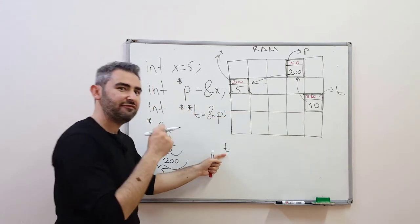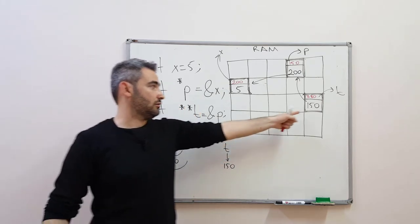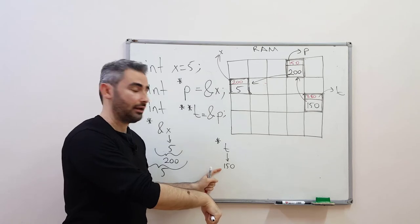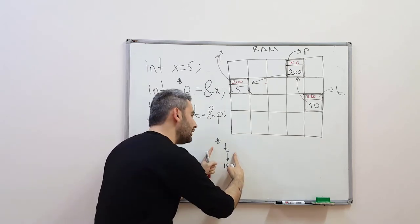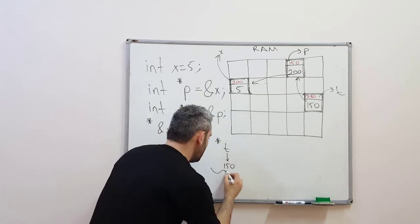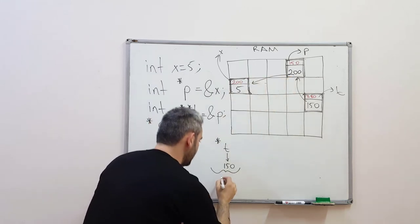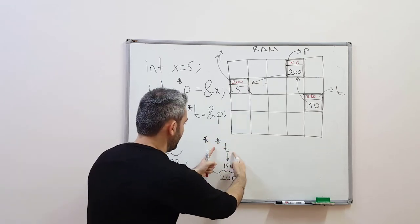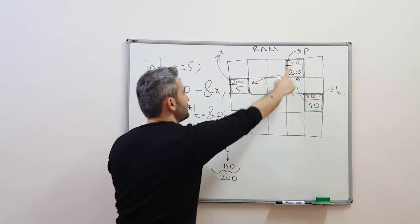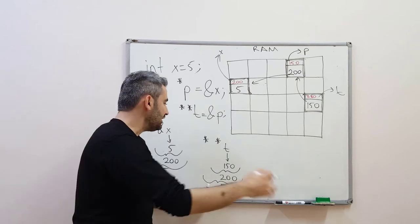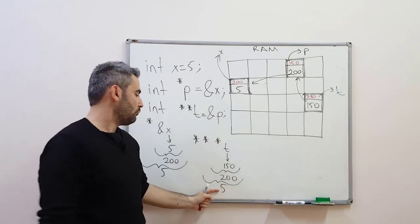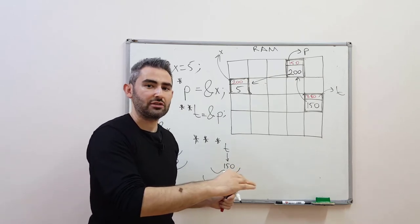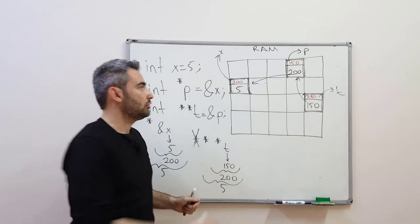If I want to print t, it will give me 150 — the content of t, which is an address. So I can dereference that: I can go to that address and look what's inside. This is 150 — resolve 150. Who is in 150? It's 200. And 200 is also an address, so I can resolve that too. Resolve 150, I get 200. Resolve 200, it's 5. And you can't keep resolving further — if I try to resolve one more time, this means resolve 5. But 5 is not a valid address; it's a pure integer. You can't go any further.